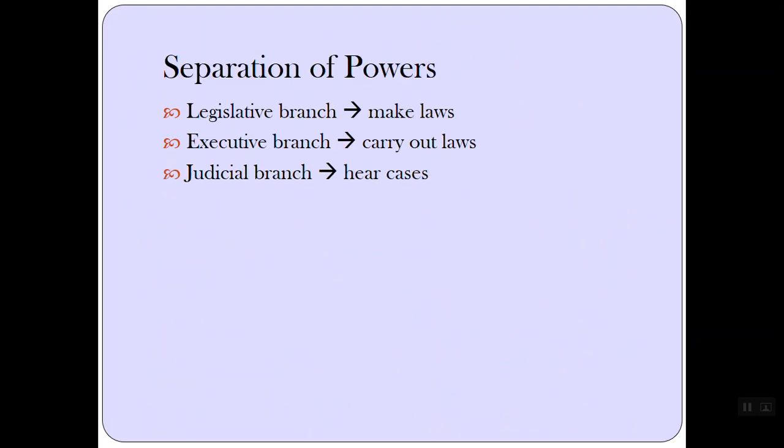Then we had checks and balances with separation of powers. The legislative branch makes the laws, the executive branch carries out the laws, and the judicial branch hears the cases. With checks and balances, they could make sure that no one branch was bigger than the other. If the legislative branch made an unconstitutional law, the judicial branch could strike it down. The executive branch would decide whether or not to sign the law; if he decides not to sign it, the legislative branch can override that veto. They all check and control each other's power.